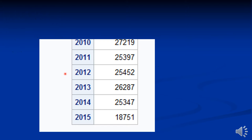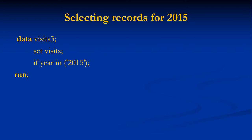This is the result from PROC FREQ after the correction. Because I need the records for 2015, to select just the records for 2015 I again use an IF statement: if year equals 2015, then run that record.